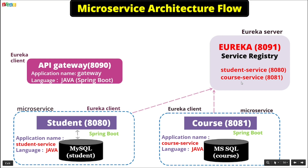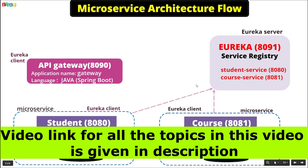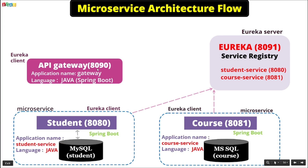Now we have the API Gateway, which is again a Spring Boot project we created in the last video, running on port 8090. Whenever we deploy this API Gateway, it also registers itself to the Eureka server. The application name of the Gateway is registered there along with the port and the IP address.